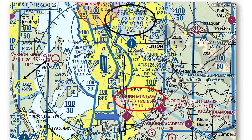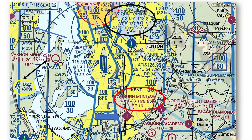See the blue rectangles in the chart with the arrows pointing to them. These numbers indicate the floor and ceiling altitudes of the Class B airspace surrounding Seattle-Tacoma International Airport. The area in the upper left of the chart means that the Class B airspace to the west of Seattle-Tacoma International Airport extends from 5,000 feet to 10,000 feet MSL in that area.